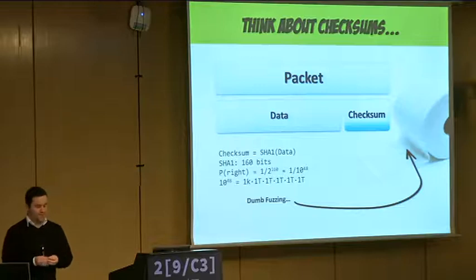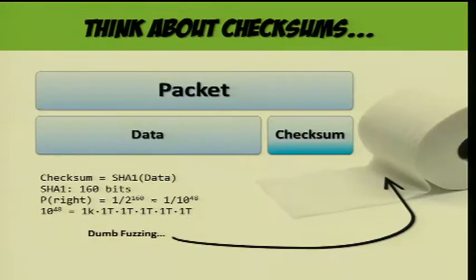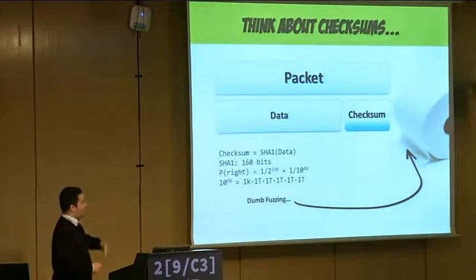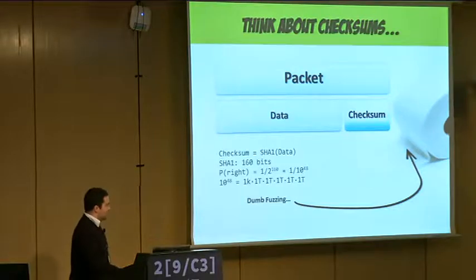Think about this really simple example: you have a packet where part of it is data and the other part is a checksum. Think about this checksum as some kind of SHA1 — that means you have 160 bits and you have to get them all right. The probability of getting this just by chance is one in two to the 160. That is like one kilo-tera-tera-tera — it's a lot.